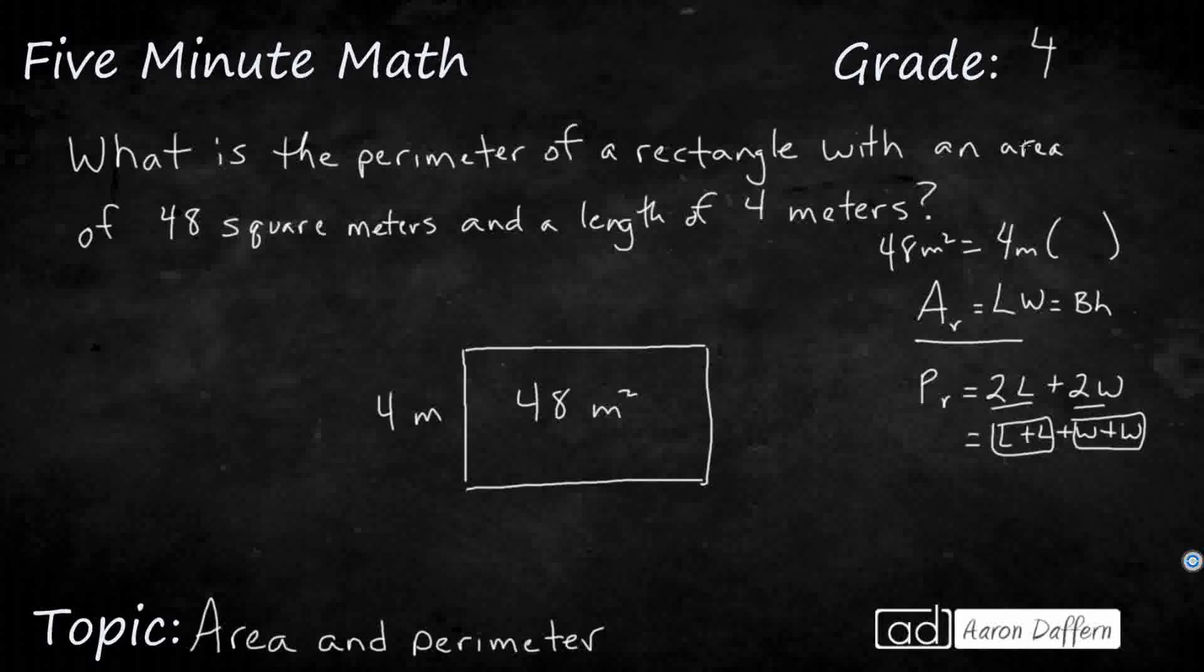Well, we should know our facts. 4 times 12 makes 48, right? 48 divided by 4 makes 12. So that means my width is 12.